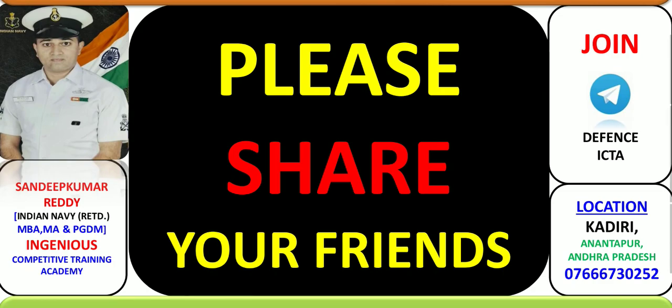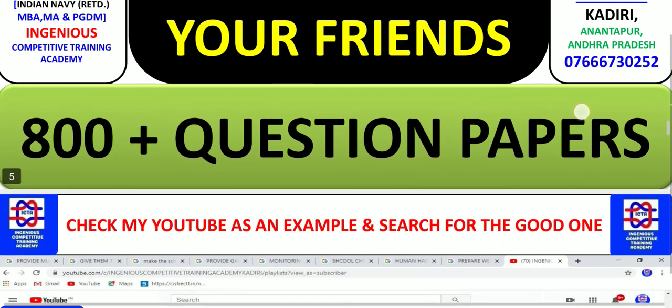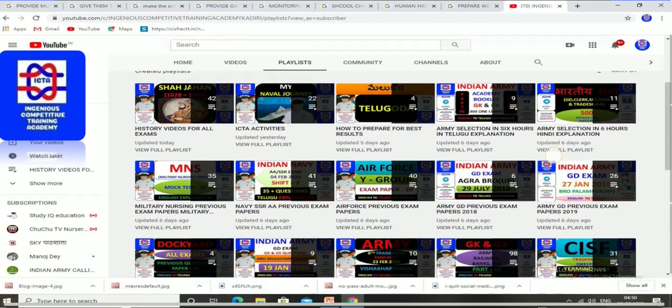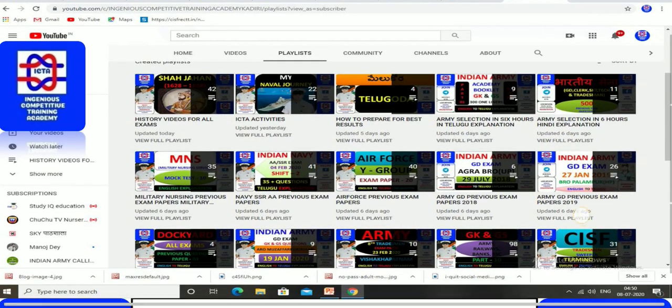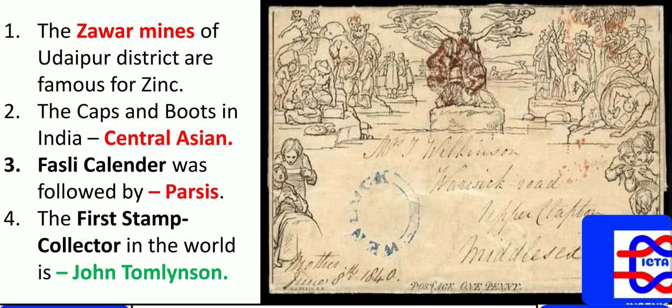I request you to check the playlist and share it with your friends. You can join on the Defense ICTA Telegram channel where more than 800 question papers are available. Next, the Zawar Mines of Udaipur district, Rajasthan, are famous for maximum production of zinc.